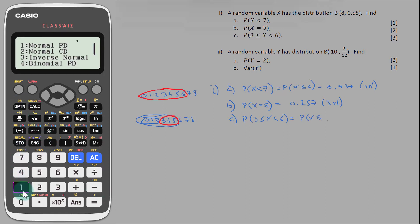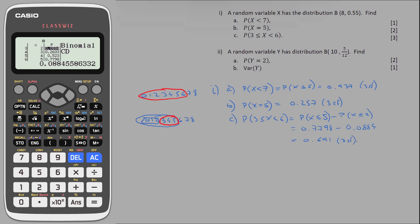By pressing option, one, down, one again, and one again, and then pressing equals to regenerate all the probabilities. So the probability that x is less than or equal to 5 is 0.7798. Subtract the probability that x is less than or equal to 2, which is 0.0884, which gives us an answer of 0.691 to three significant figures.